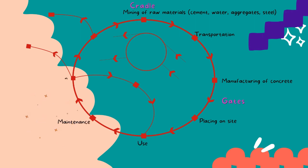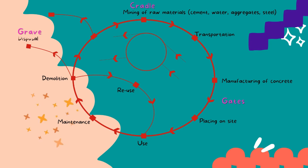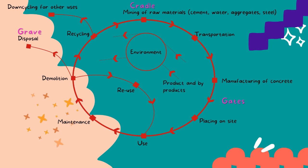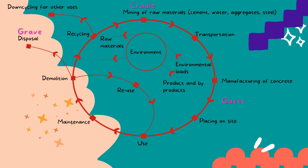Until sometimes it needs demolition and some structures will be reused. Lastly is the stage of grave, where excess waste will be disposed of and recycled, and some waste will also go to downcycling for other uses. During the life cycle of concrete, it will affect the environment, where the existence of products and by-products, also environmental loads, results in the production of raw materials and energy.